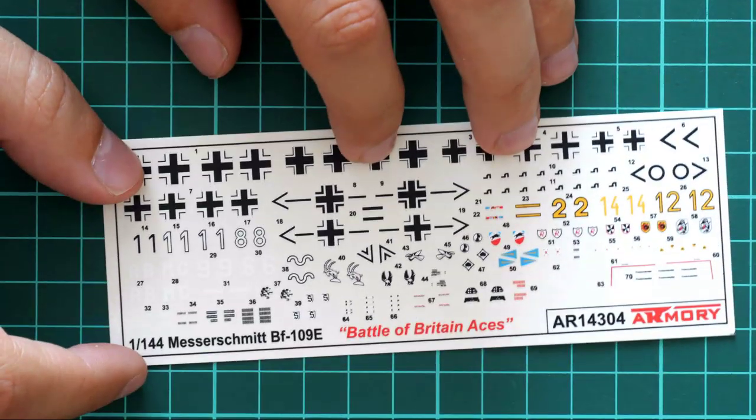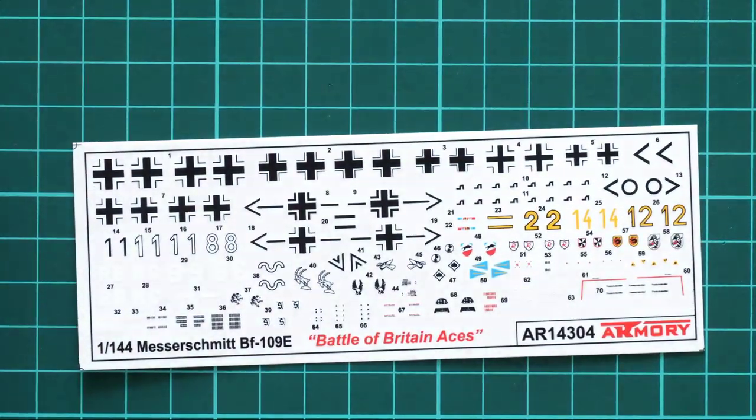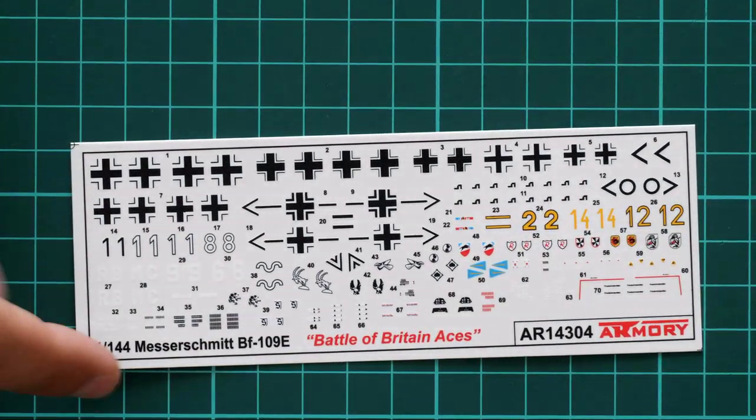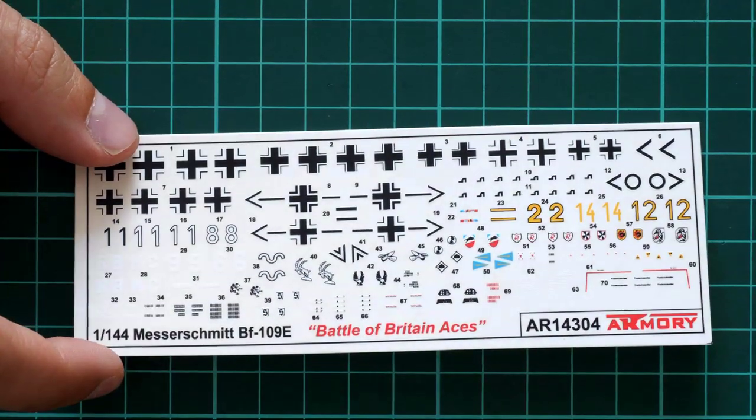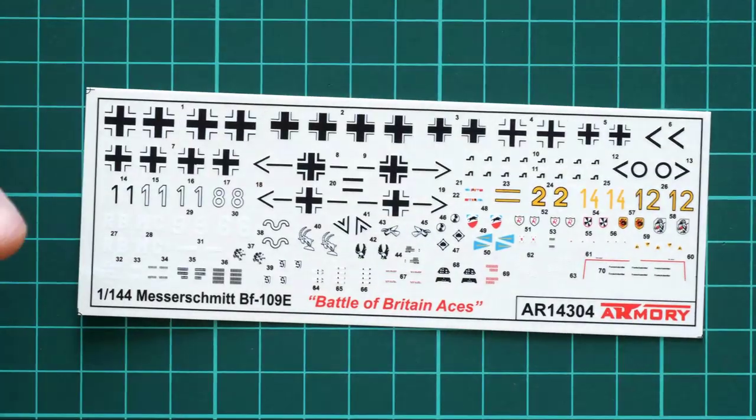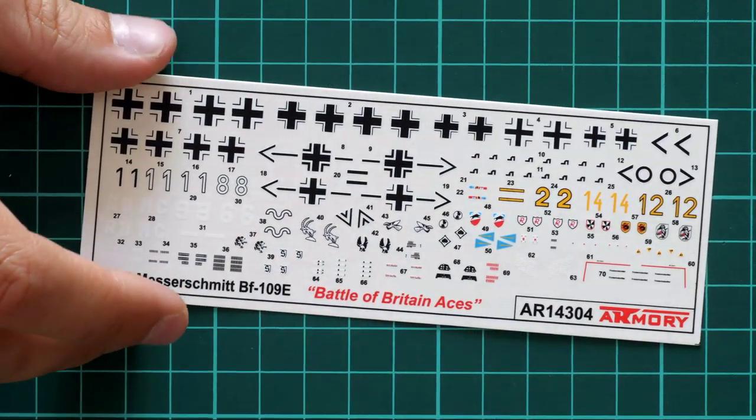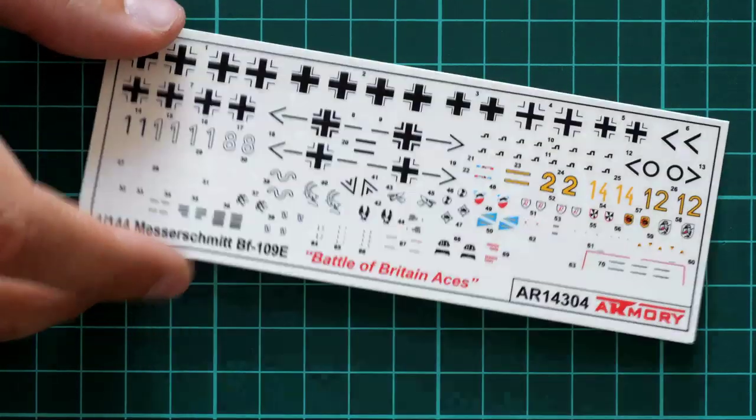Next we have the decals sheet. Here you can see that we have all necessary symbols for six marking options. We also have some decals for instrument panel. I don't see any seat belts but obviously in 1/144 scale that would be funny to get seat belts and they are not included here. We have to assemble the swastika out of separate symbols because it is not supplied as a complete symbol so be prepared.